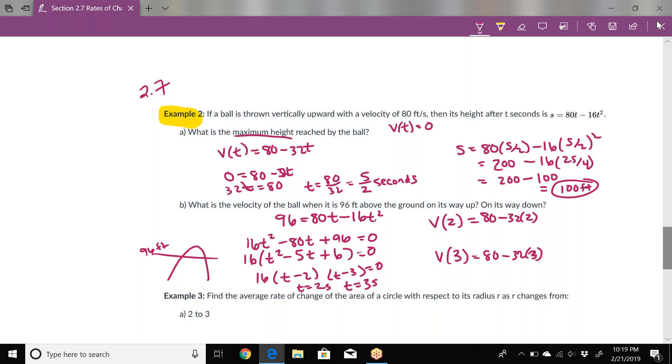This comes out to 80 - 64, which means our velocity would be 16 feet per second. That's for v(2), at t = 2.